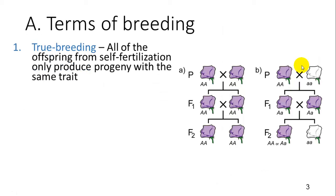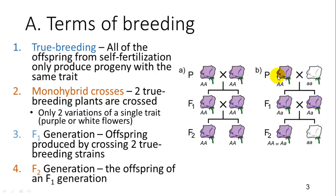Some terms and things that Mendel did: he took true breeding individuals. A true breeding individual is one where, when you cross it with another true breeding individual, they always produce the same trait. So self-fertilization of purple flowers results in all progeny having purple flowers. You can do the same with white flowers. But if they are not true breeding, then some of their offspring — like two purple flowers from a plant — some of their seeds developed plants that had white flowers.